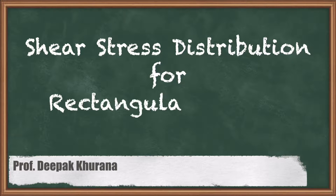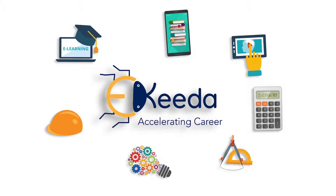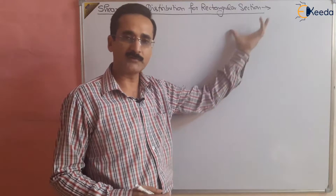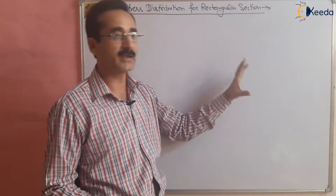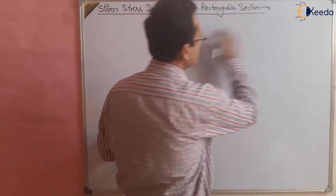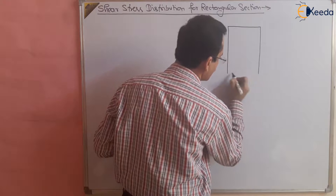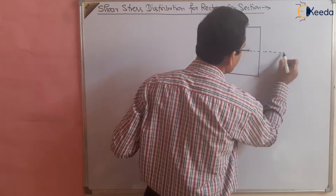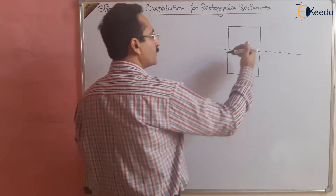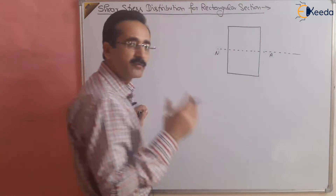Hello students. In this session we are going to study the shear stress distribution for rectangular section. We have a beam which has a rectangular section and we have to draw the shear stress diagram, or shear stress distribution for that rectangular section. This is a rectangular section of the beam and we have to draw the shear stress distribution from the neutral axis to the outer fiber. This is our neutral axis, and from the neutral axis to the outer fiber, what is the shear stress distribution?